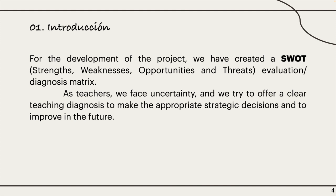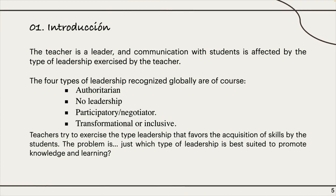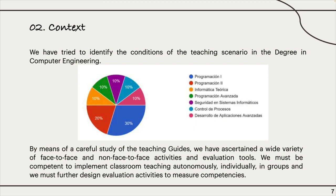To cope with this, we made an array of strengths, weaknesses, opportunities, and threats. One of the first factors is the type of teacher, which can belong to any of four types shown in this slide. To explore this, we checked with a number of professors who deal with various subjects in the computer science program, covering seven different subjects ranging from the first to the last year, giving us a reasonable cross section of the situation.